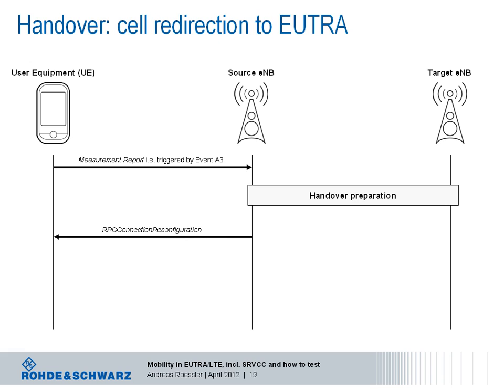The eNodeB controlling the target cells generates the handover command and transfers it back to the source eNodeB during handover preparation. Within the RRC connection reconfiguration message, the source eNodeB forwards the handover command transparently to the device — neither adding nor modifying any information — but adds information about the target cell identity and optionally its frequency. It also provides the device with common radio resource configuration for the target cell, such as how to perform the random access procedure, and includes the identity to be used in the target cell, the C-RNTI.